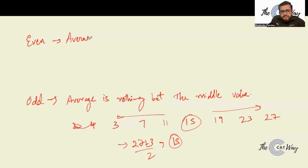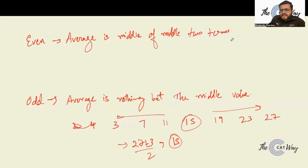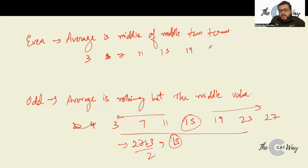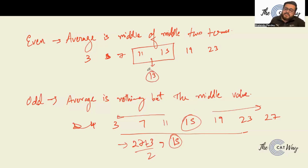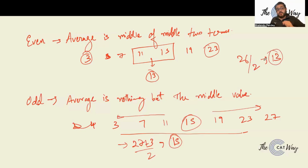When the number of terms is even, the average is the middle of the middle two terms. For the series 3, 7, 11, 15, 19, 23 — the middle two terms are 11 and 15. Their average is 13. Check: first term plus last term = 3 + 23 = 26, divided by 2 gives 13. Confirmed.